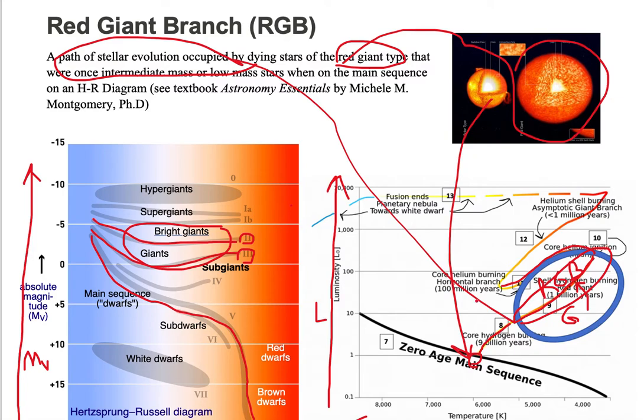So where stars are on the main sequence in the intermediate to low mass, these stars will evolve off the main sequence and start to die, creating paths similar to these paths that we see circled in red.